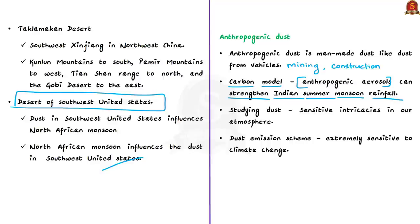The role of dust in the atmosphere is huge. By studying dust we can understand the sensitive intricacies in our atmosphere. Many studies show that dust emission schemes are extremely sensitive to climate change. Understanding these mechanisms will help us predict rains better and also help us fight global climate change.